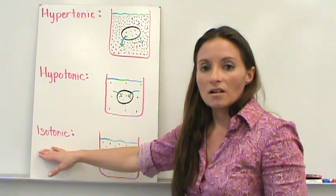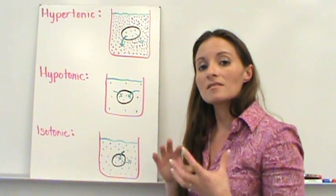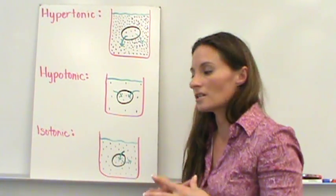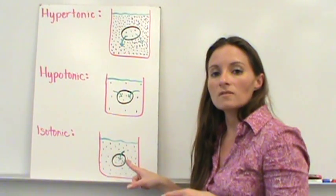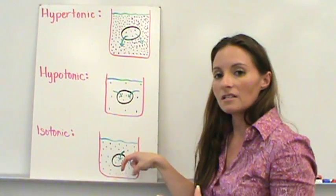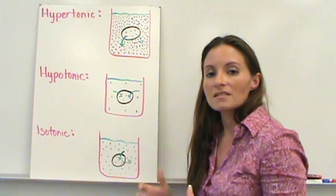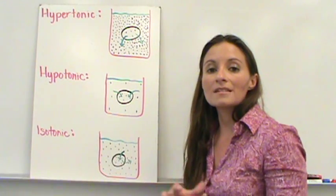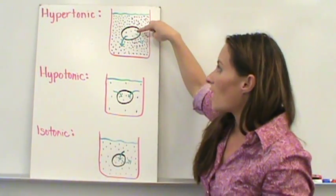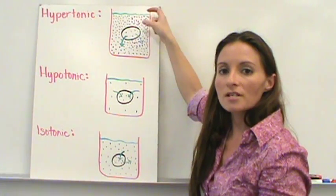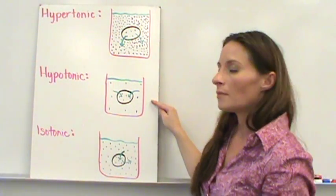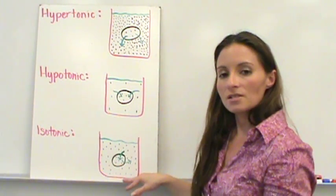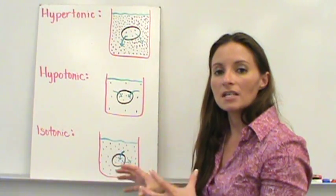Lastly, we have an isotonic solution. Iso means the same, so an isotonic solution has the same concentration inside the cell as outside. Materials will move into and out of the cell at the same rate — movement still continues, it's just equal in both directions. To summarize: in a hypertonic solution, water moves out quickly; in a hypotonic solution, water moves in quickly; and in an isotonic solution, equal movement occurs in both directions.